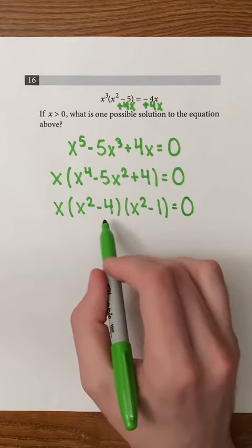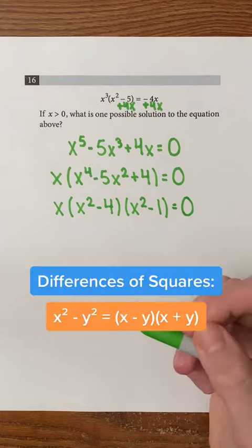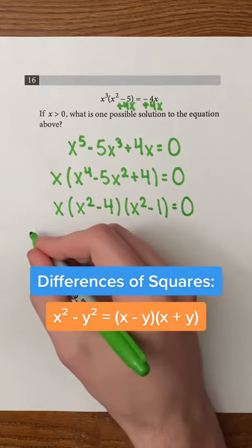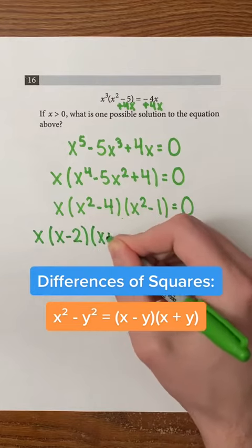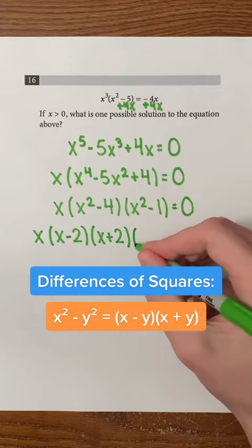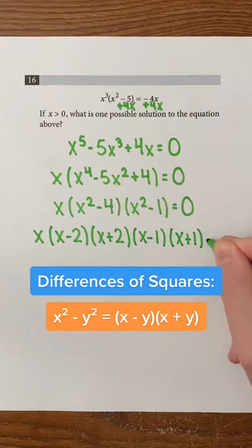Notice that x squared minus 4 and x squared minus 1 are differences of squares. So, we can factor x squared minus 4 as x minus 2 and x plus 2. We can also factor x squared minus 1 as x minus 1 and x plus 1.